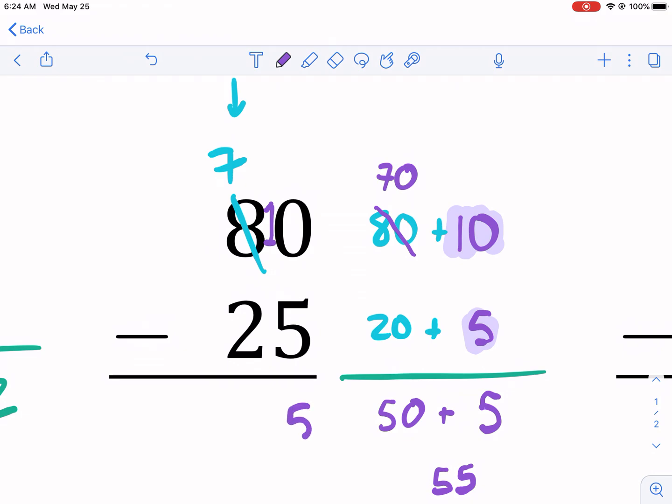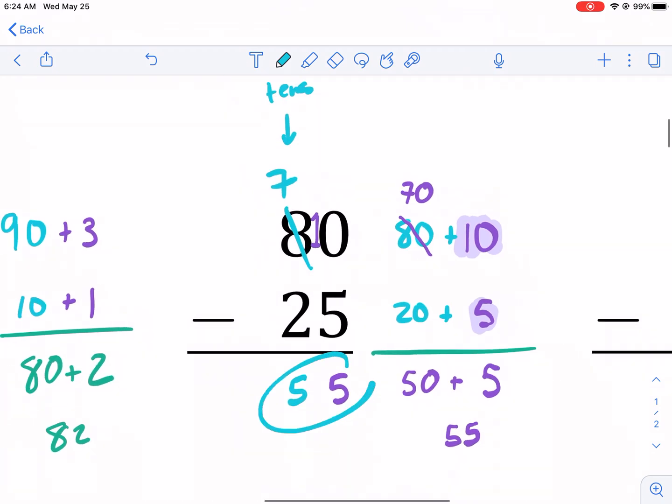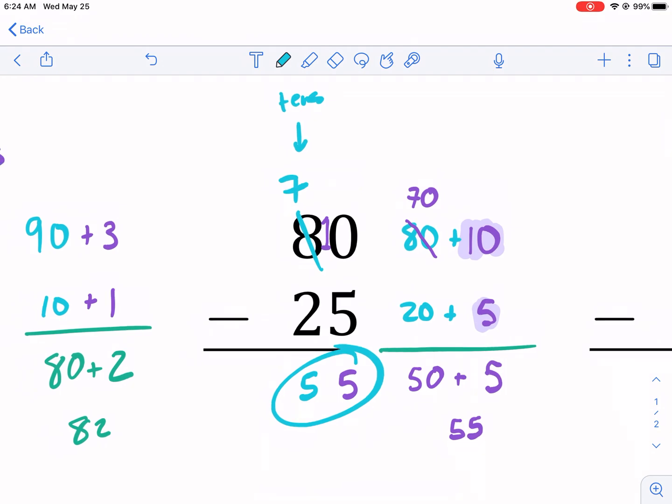So now I have 10 minus 5, I get 5. And then 7 minus 2, I just go straight down here. Straight down this way. 7 minus 2 is 5. I get the same thing, and I just borrowed from the next number over from the tens place and add to the 1.